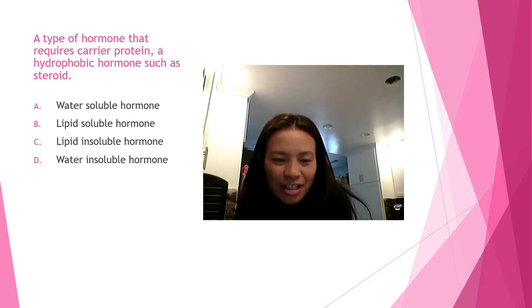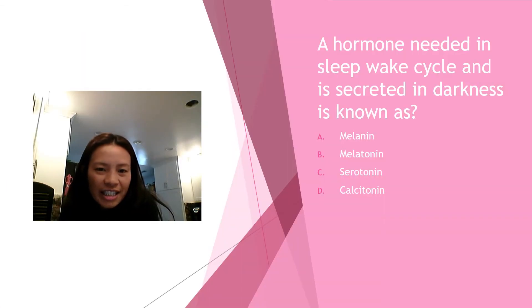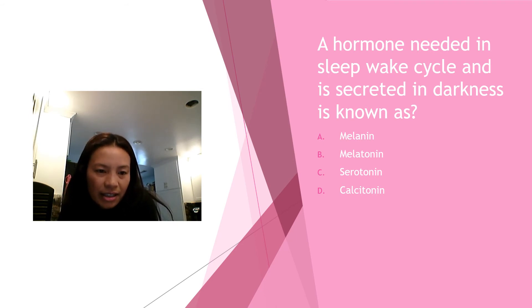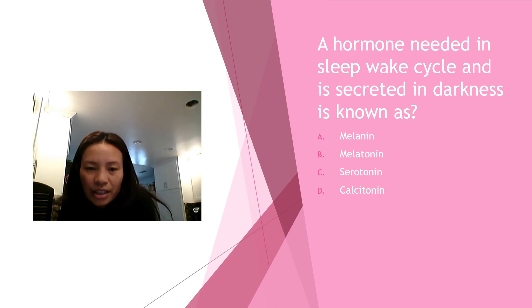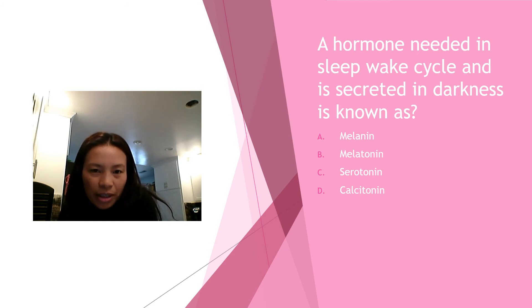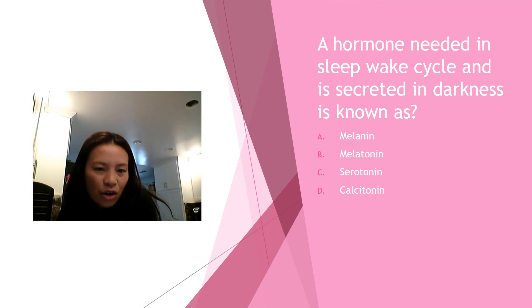Question eight: a hormone needed in the sleep-wake cycle that is secreted in darkness is known as — is it A) melanin, B) melatonin, C) serotonin, or D) calcitonin? The answer is melatonin, secreted when it's dark. Melanin is for skin; serotonin stabilizes mood, feelings of well-being and happiness; and calcitonin is for calcium homeostasis.